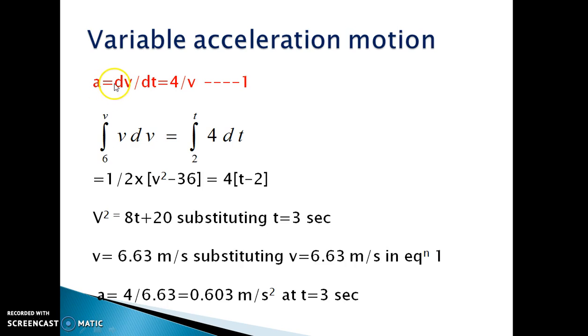So we can write A = dV/dT. Integrating this equation for acceleration to get the velocity, we can put the limits for velocity 6 to V and 2 to t. Solving this integration, we will get equation V² = 8t + 20.